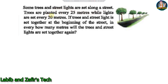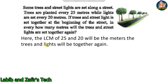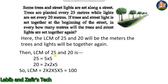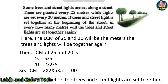Next problem: Trees are planted every 25 meters and street lights are set every 20 meters along a street. If they are set together at the beginning, how many meters apart will they next be together? We need the LCM of 25 and 20. Using prime factorization: 25 = 5 × 5 and 20 = 2 × 2 × 5. LCM = 2 × 2 × 5 × 5 = 100. So after every 100 meters, the trees and street lights are set together.